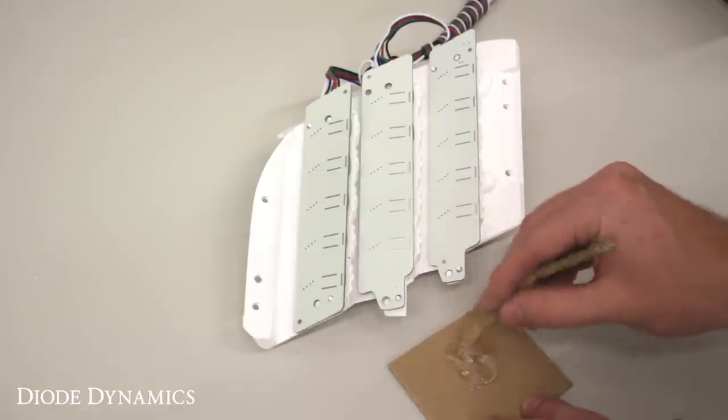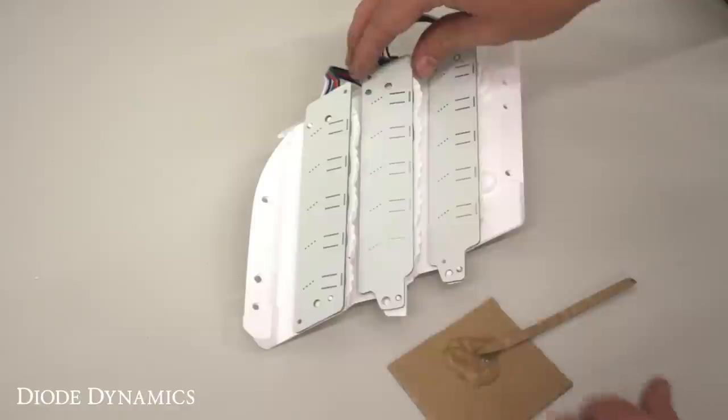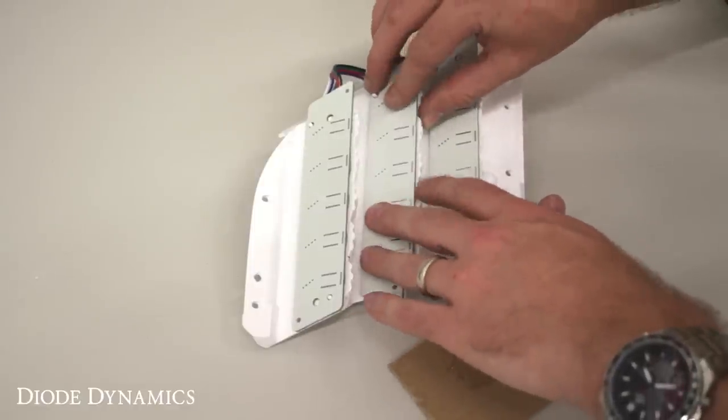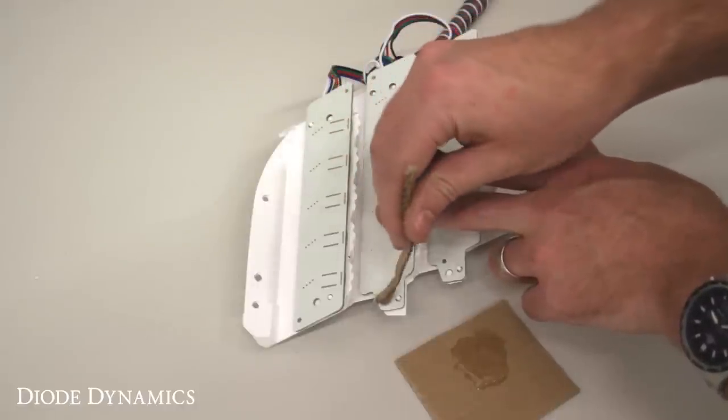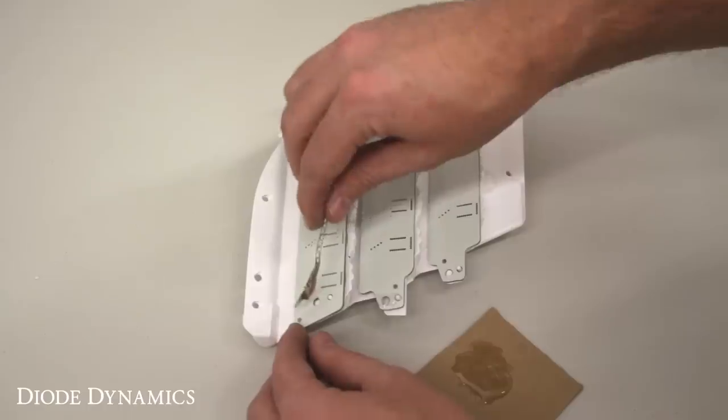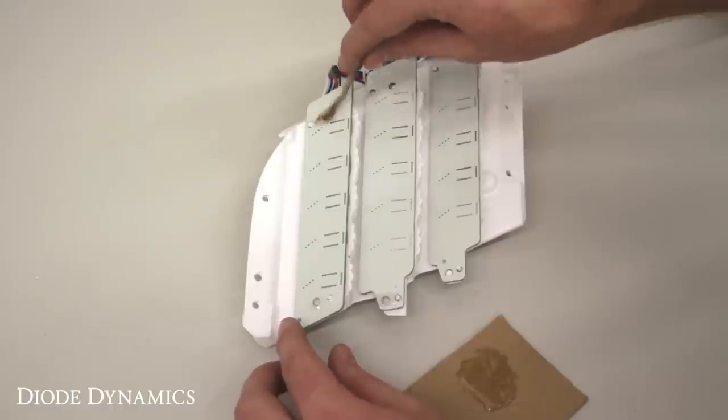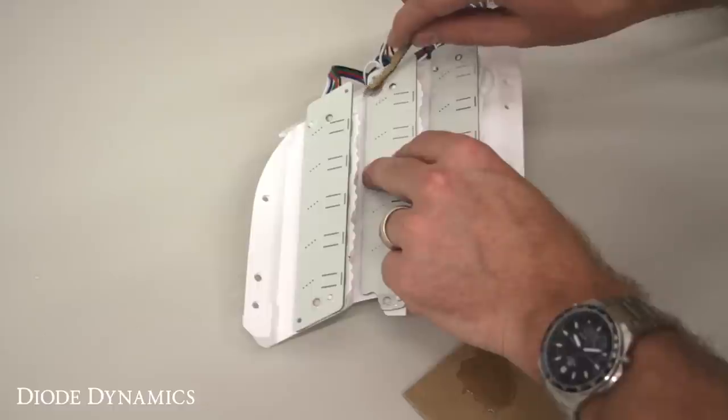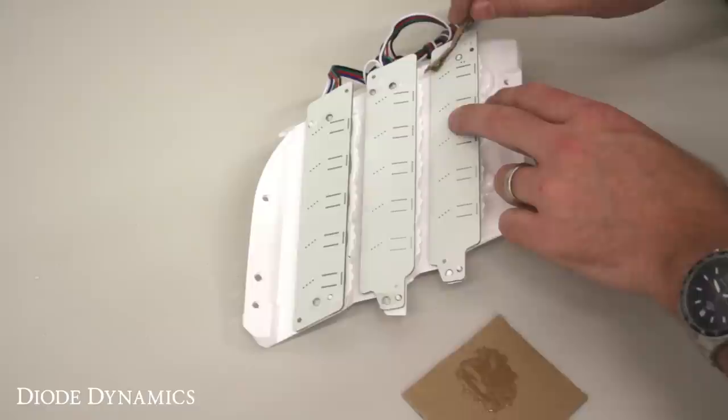And then we're just going to double check to make sure everything is aligned properly. Just set anything back in place that needs to be there. And then we'll just go ahead and put some drops of epoxy over every exposed point. We're going to put it on the alignment tabs as well as those original plastic rivets. So just a drop on each one of them should do it to hold everything nice and securely in place.